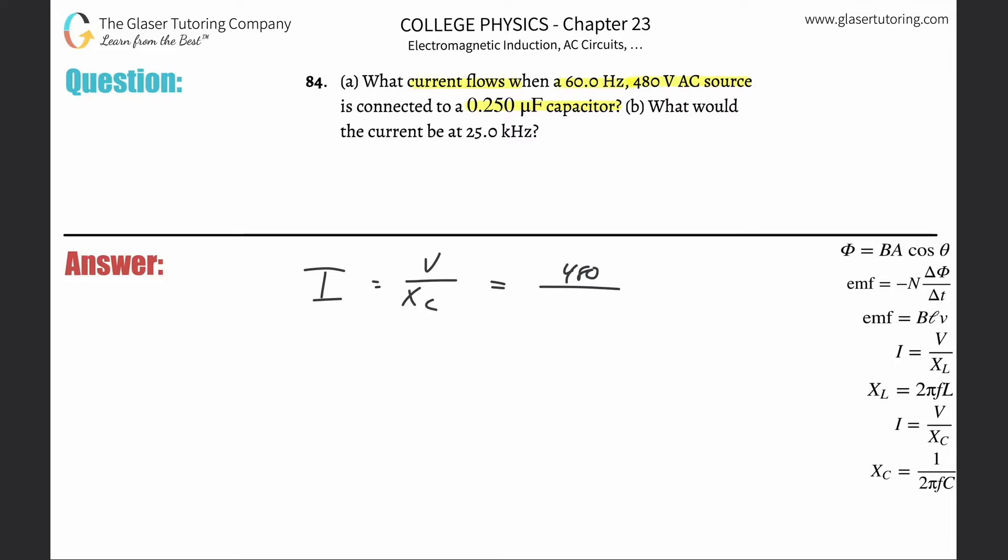Well, it's over here on the bottom right. It says that the reactive capacitance is going to be equal to 1 divided by 2π multiplied by the frequency of oscillation multiplied by the capacitance of the capacitor.